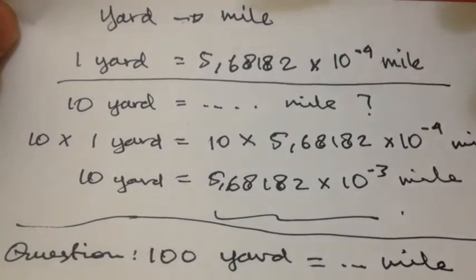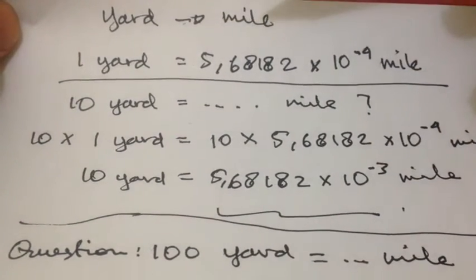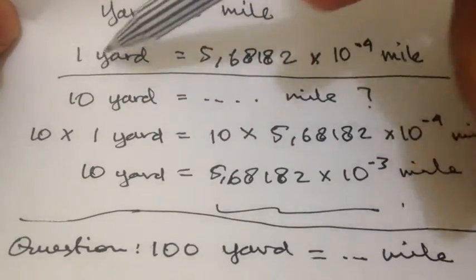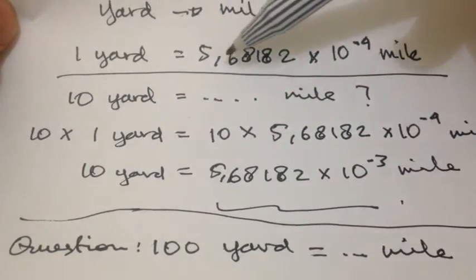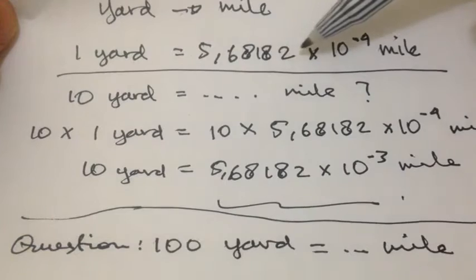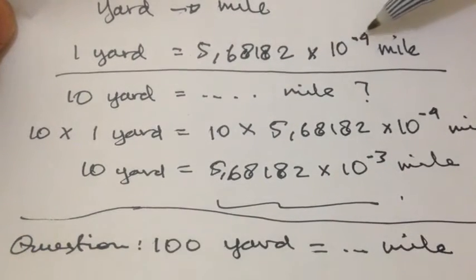Today we are going to convert yard into mile. The basic rule: 1 yard is equal to 5.68182 multiplied with 10 power minus 4 mile.